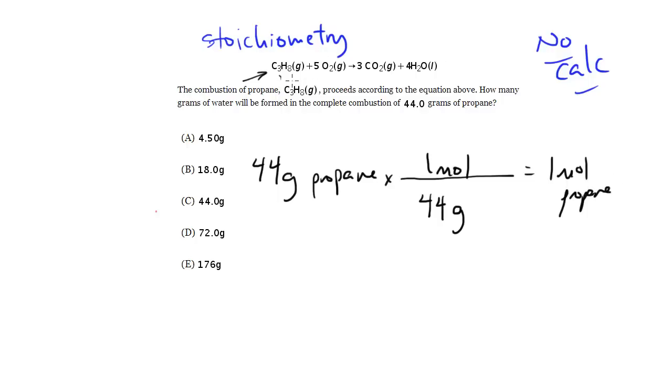So if 1 mole of propane is used, then how many moles of water is formed? Well it's 1 mole of propane. We look for the mole ratio. For every 1 mole of propane according to the equation, we produce 4 moles of water. So in this case we're going to be producing 4 moles of water.